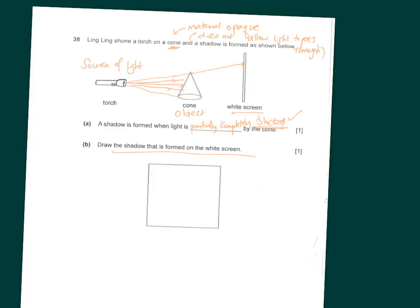Part B: draw the shadow formed on the screen. Since the object is a cone, the shadow on the screen is a triangle shape. You should shade the shadow as well, since shadows are shown as darker portions. Half a mark for the triangle shape, and half a mark for the shading.